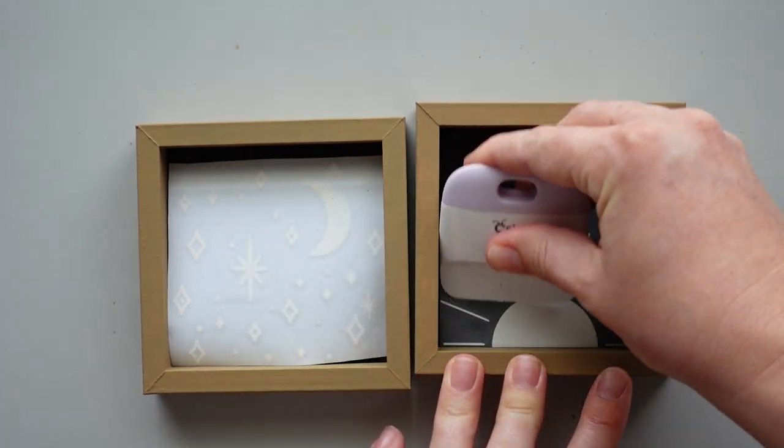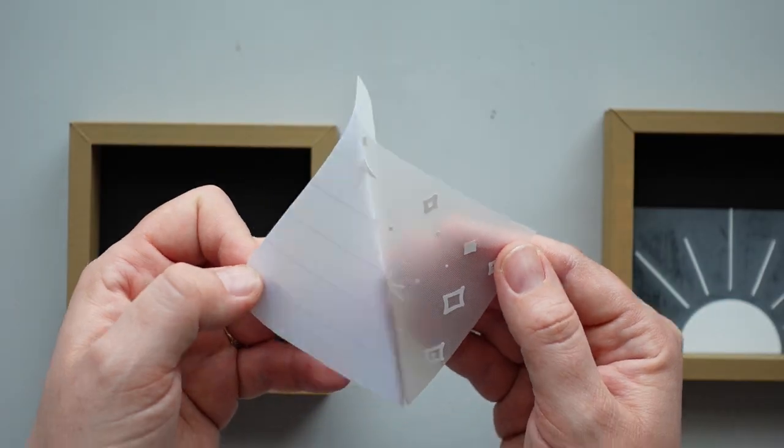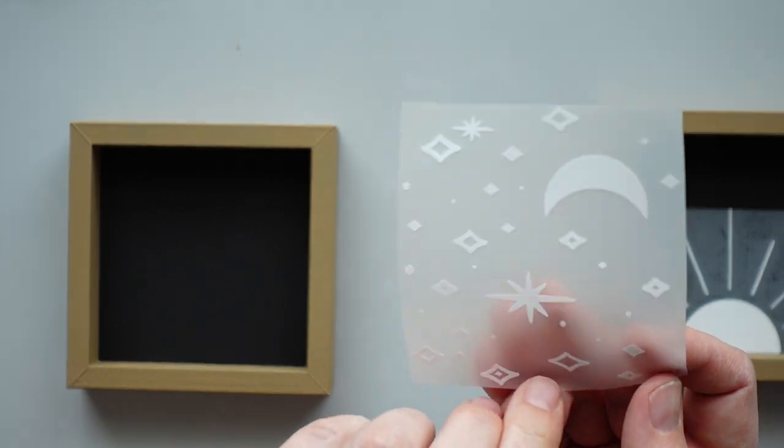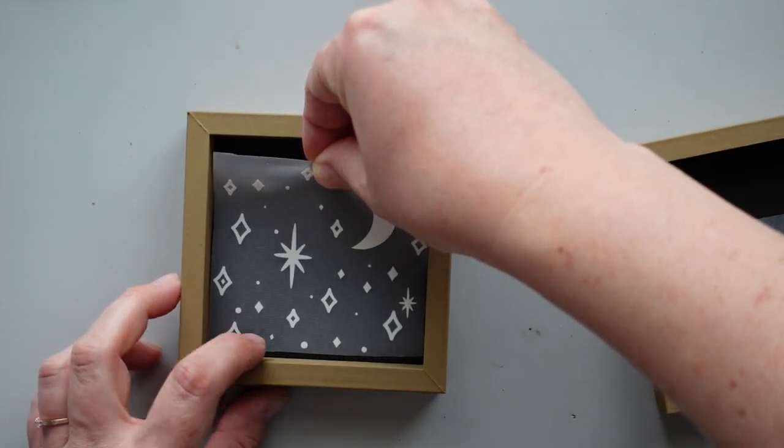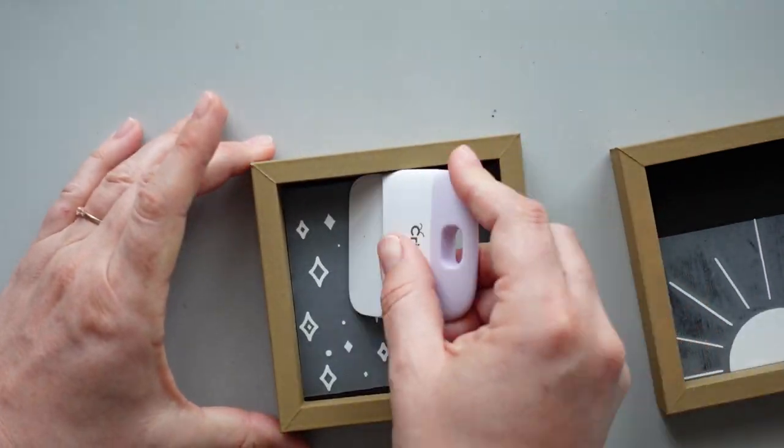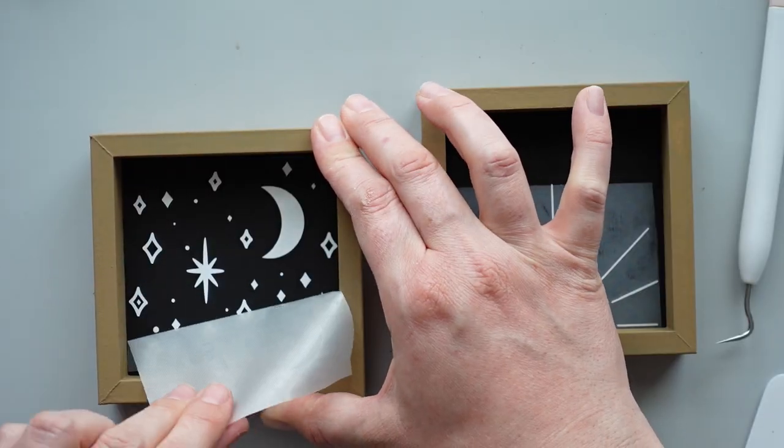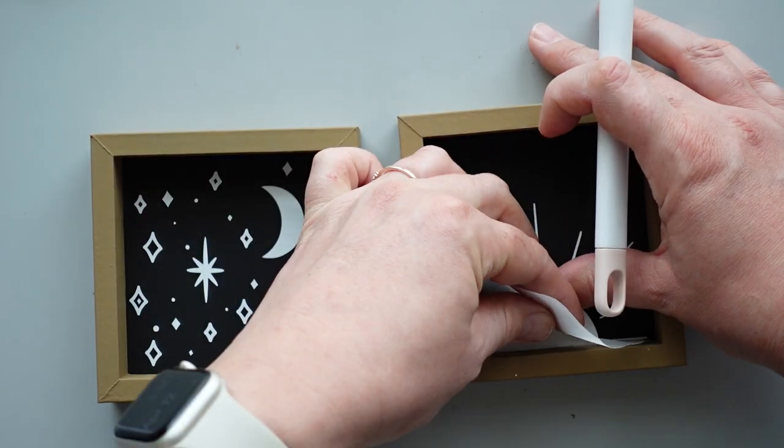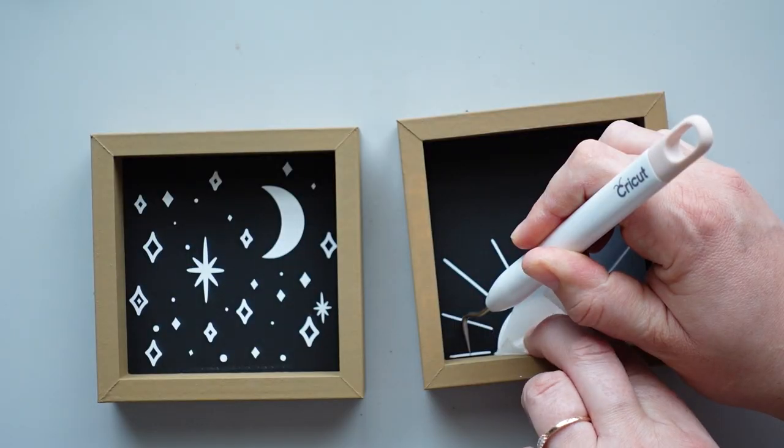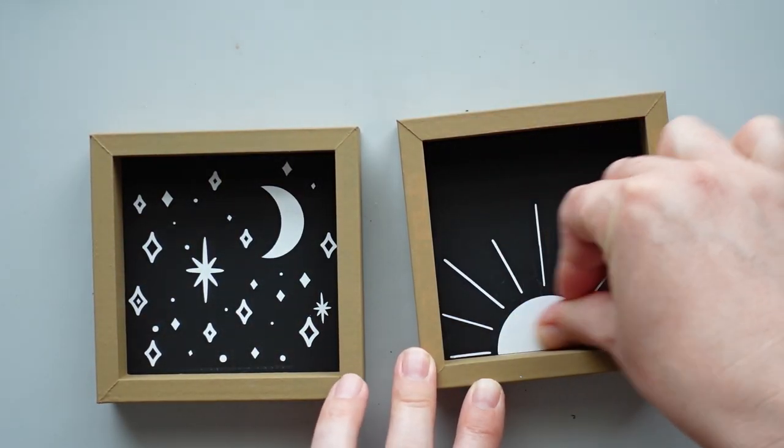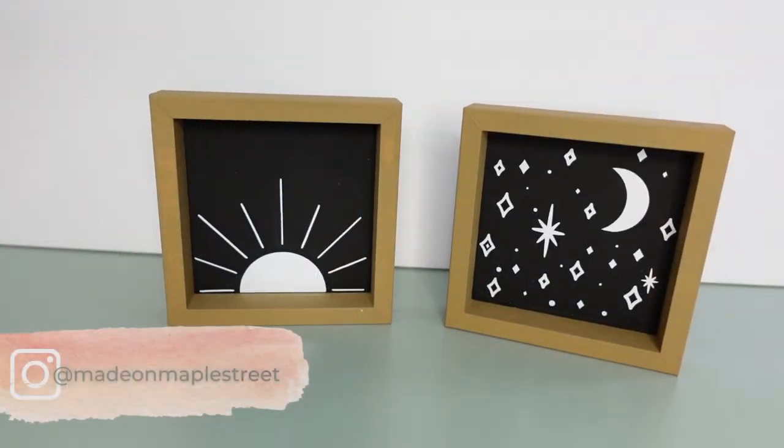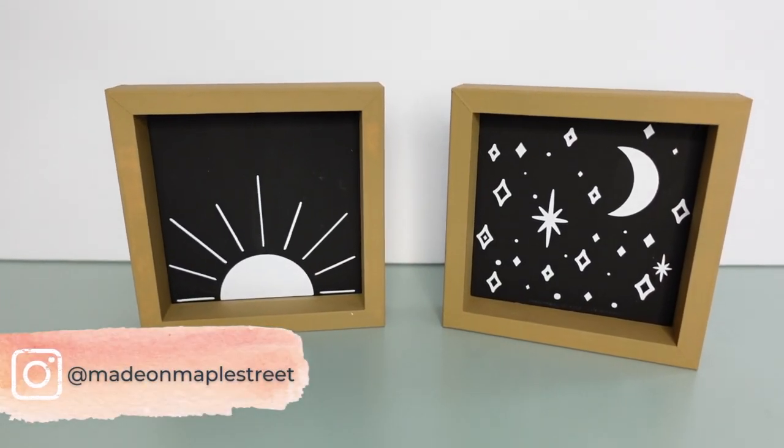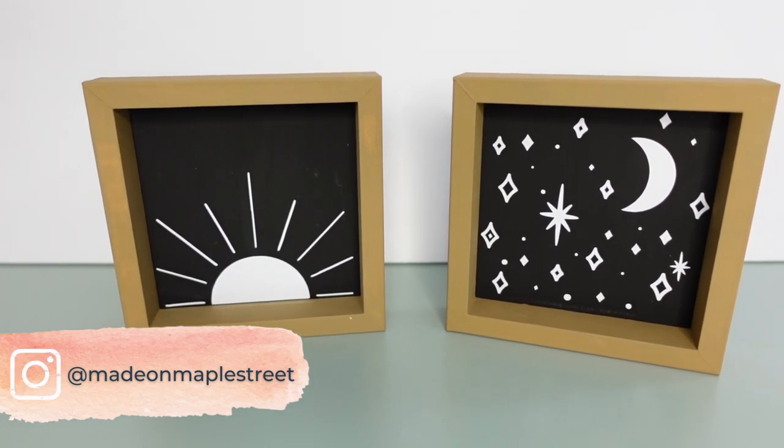I used my Cricut machine to cut the designs out of matte white vinyl and attached them to the signs with the help of my favorite opaque transfer tape from Expressions Vinyl. After removing the transfer tape, these fun signs were finished. Are you on Instagram? I'd love to connect with you there. Come find me at Made on Maple Street.